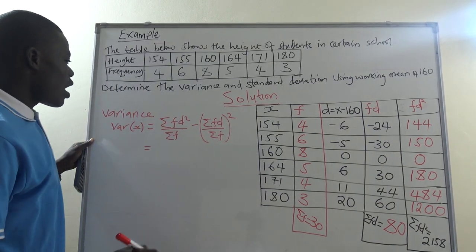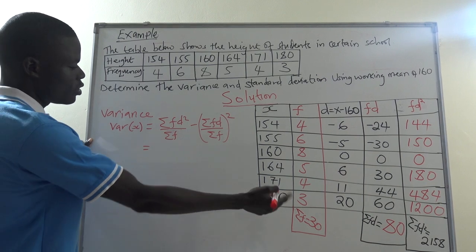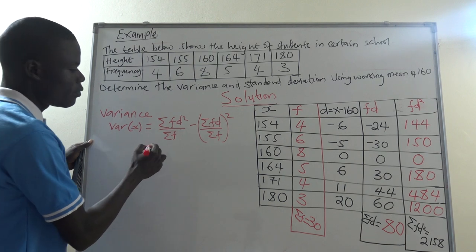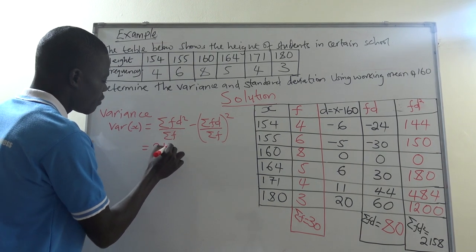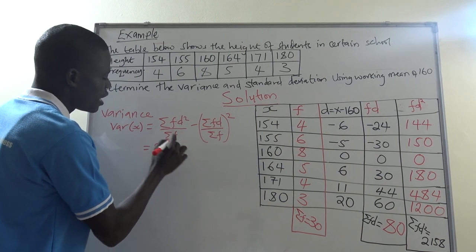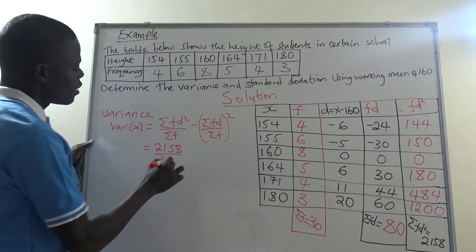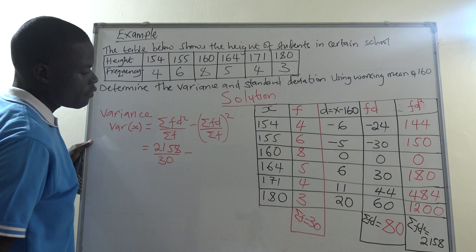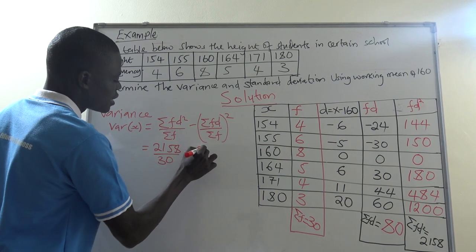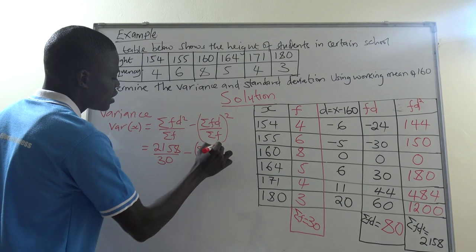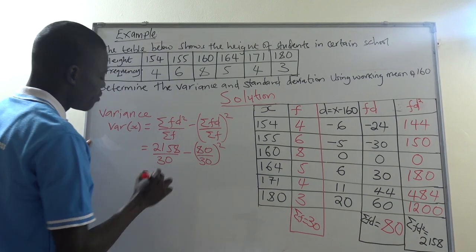Then you come and substitute the values which you have there. The value of summation of FD squared was 2,158 divided by summation of F which is 30, minus summation of FD, here we got it as 80 divided by 30, but this one is squared.